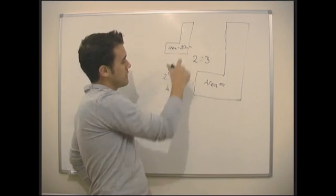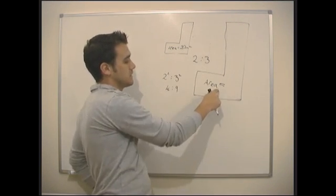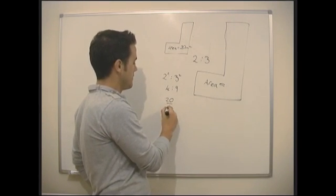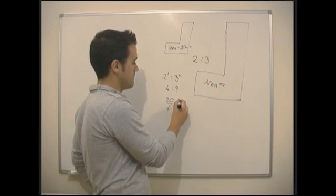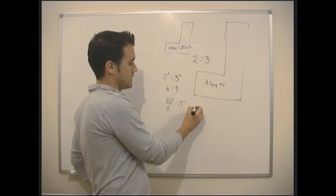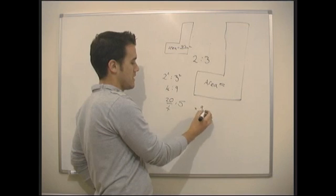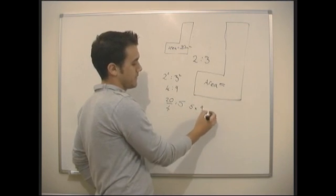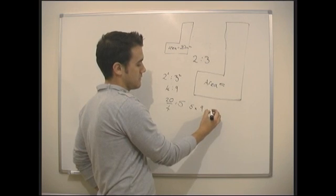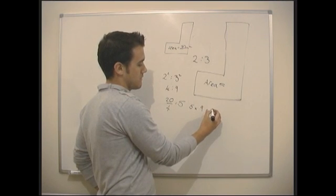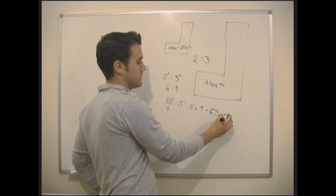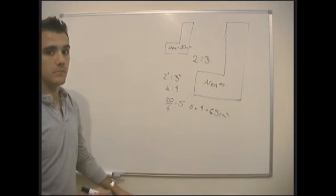So the area has gone from 20 centimeters. What's it going to be now? So 20 divided by 4 gives us 5, and then times by 9. 5 times 9 gives us 45 centimeters squared.